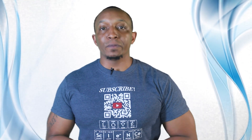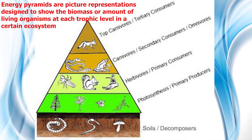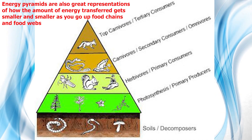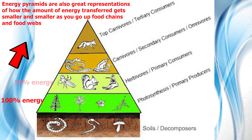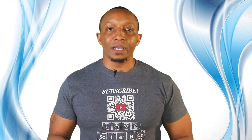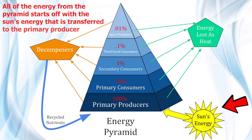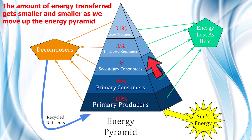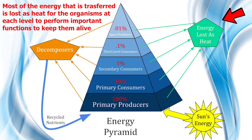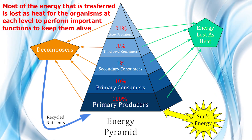Now let's talk about energy pyramids, also known as ecological pyramids. Energy pyramids are visual representations designed to show the biomass, or amount of living organisms, at each trophic level in a certain ecosystem. They are also great representations of how the amount of energy transferred gets smaller and smaller as you go up food chains and food webs. All of the energy in the pyramid starts off with the sun's energy transferred to the primary producer, and like we said, most of the energy is lost as heat at each level for organisms to perform important functions to keep them alive.